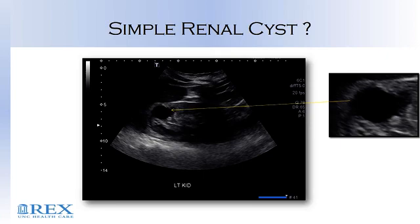If you're in a radiology arena, always utilize color if you see anything like a quote simple cyst. This person's BUN is 50 and creatinine is 6. They have endocarditis and are 28 years old.